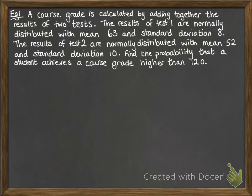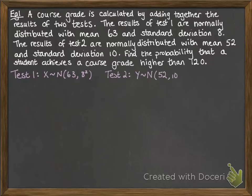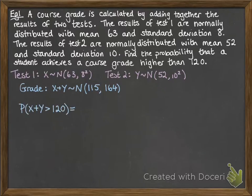A course grade is calculated by adding together the results of two tests. We've got the standard deviation and the mean of each of those tests there. We want to find the probability that a student achieves a course grade higher than 120. So we're going to talk about test one as X and test two as Y. And then the grade is found by adding them together. So that will also follow a normal distribution. We're going to add together those means to get 115 and add together the variances to get 164.